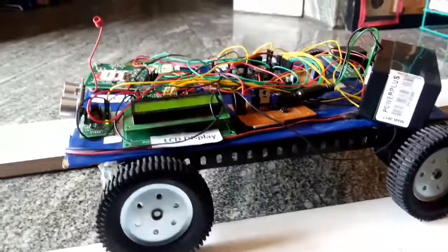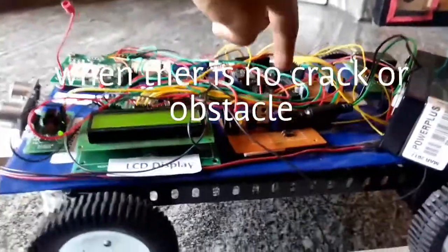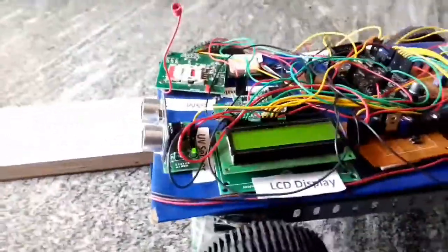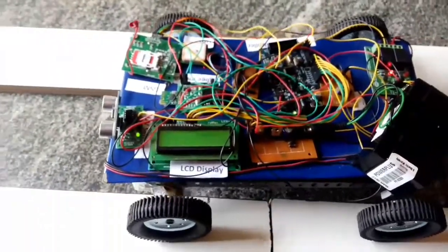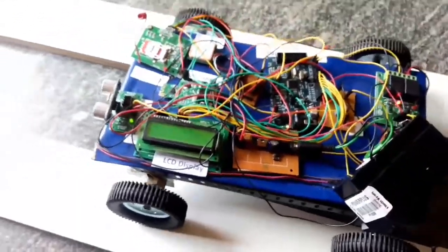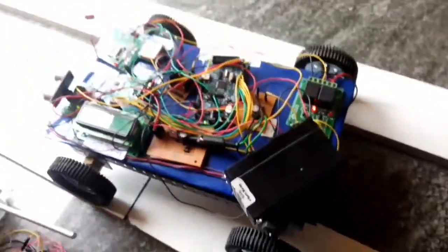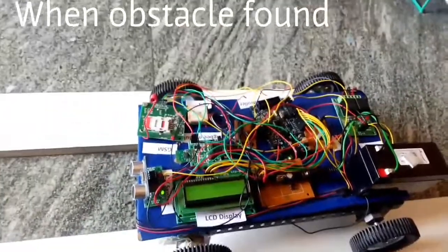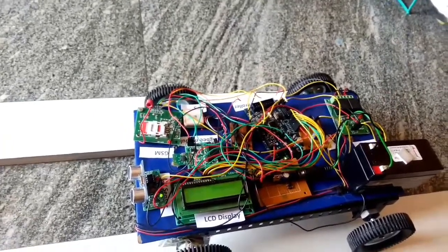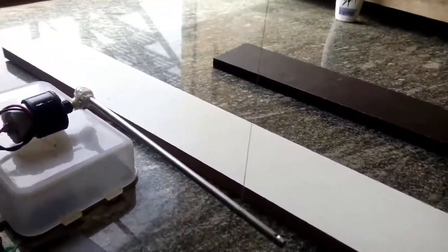Now let us see the working of our proposed model. I am going to start the robot now. The robot starts running over the track until it detects an obstacle or crack. If there is no crack or obstacle it will run until it detects. Now let us see what the robot will do when it detects the obstacle.